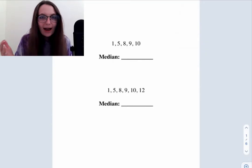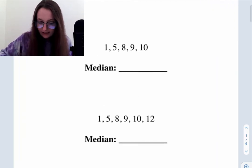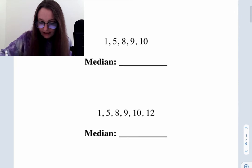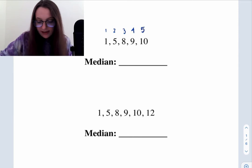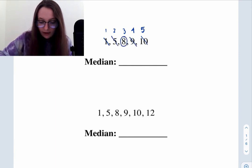All right, so let's just review how to calculate the median with a small set of data. Let's look at the top set right here. We can see that there are five terms in this set. Given that they are already in chronological order, we just cross out one number on each side until we reach the middle value. So the median for this data set is eight.